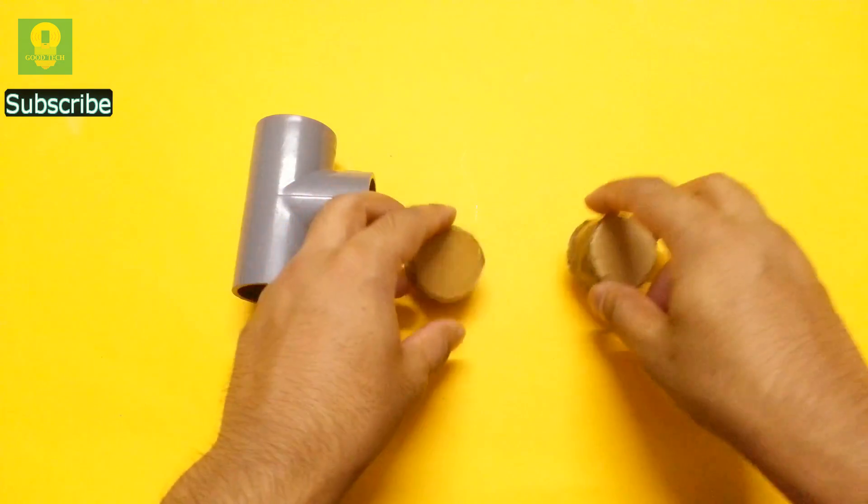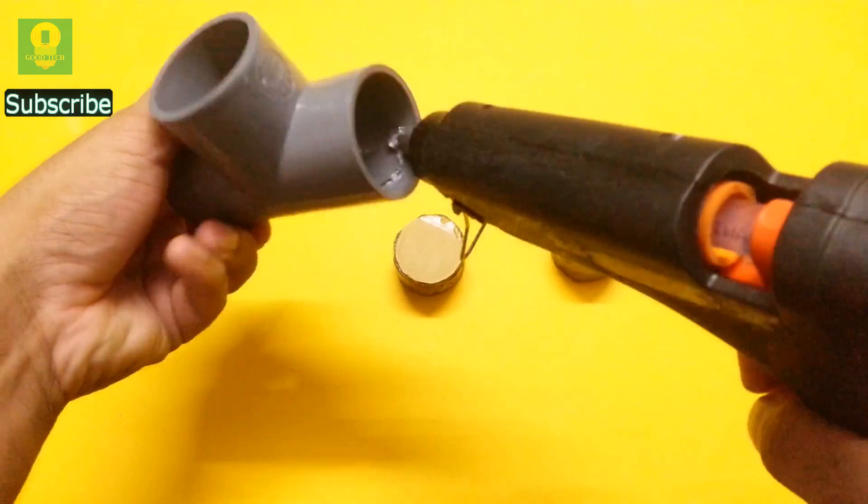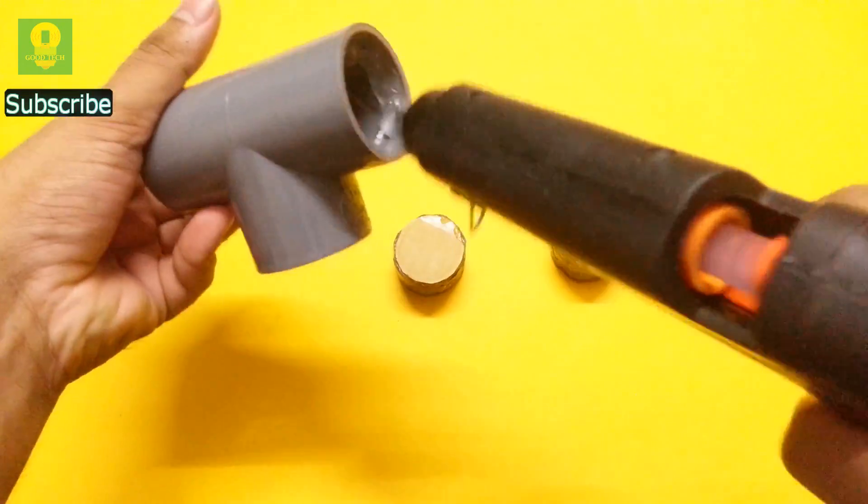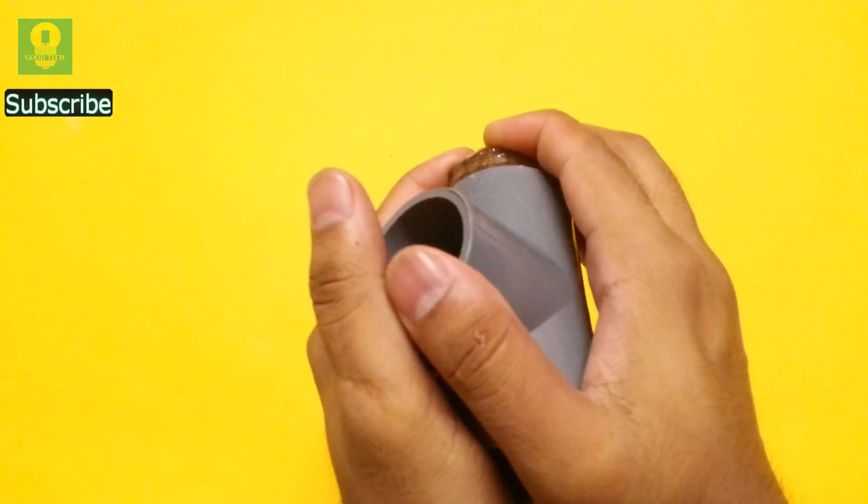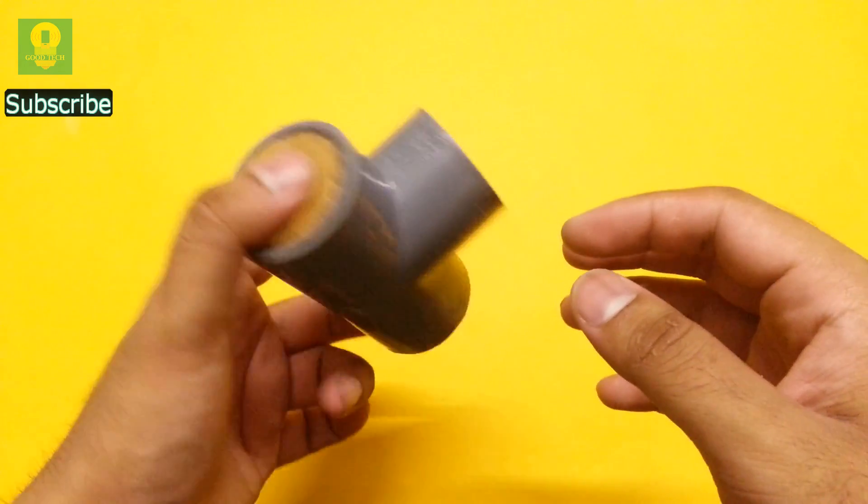Make two similar pieces. Apply hot glue and fix the stack to close the holes in the PVC tee. Insert both the stacks in the PVC tee like this.